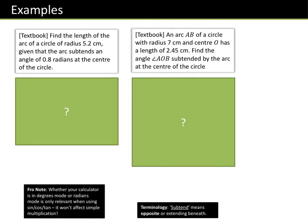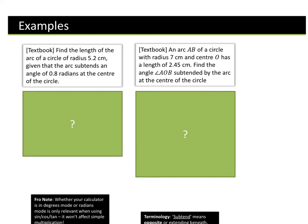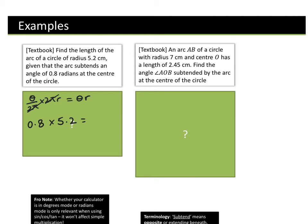Some nice simple examples. Find the length of the arc of a circle with radius 5.2, given that the arc subtends an angle of 0.8 radians at the centre. We know arc length = theta × r. Our theta is 0.8 and our radius is 5.2. I'm literally going to multiply them: 0.8 × 5.2 = 104/25 = 4.16 centimetres.